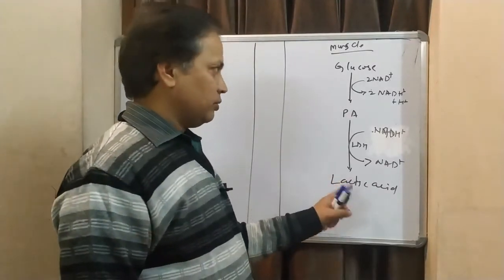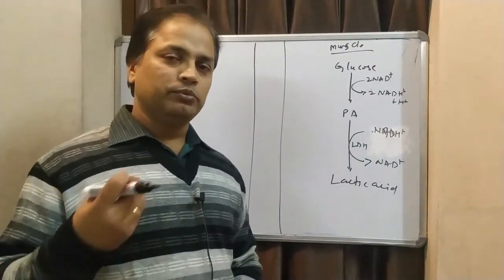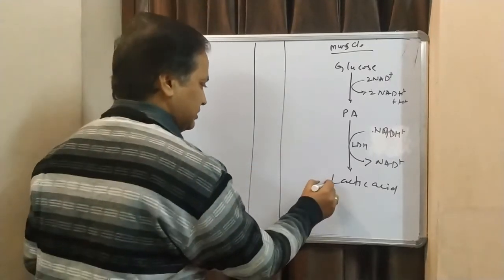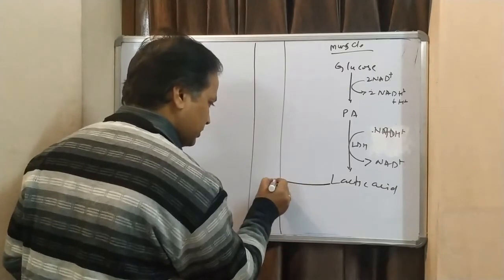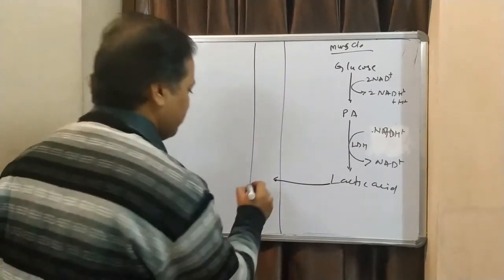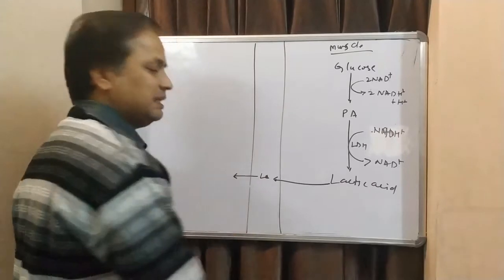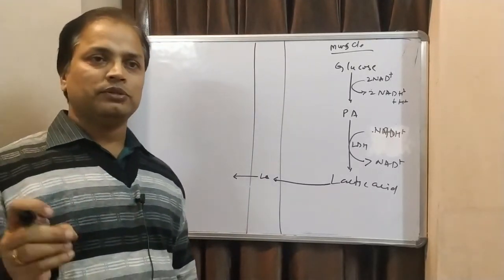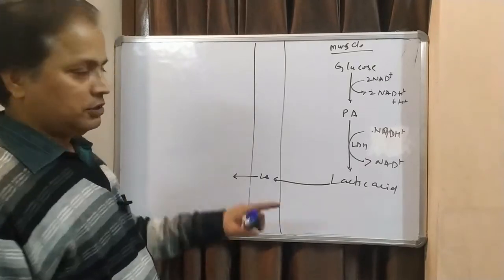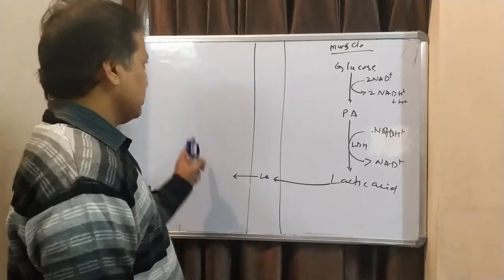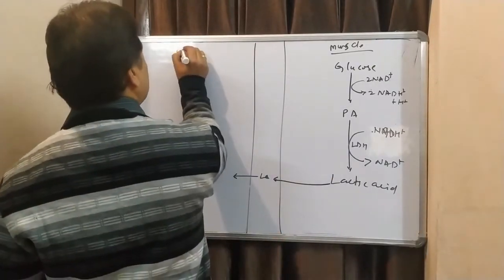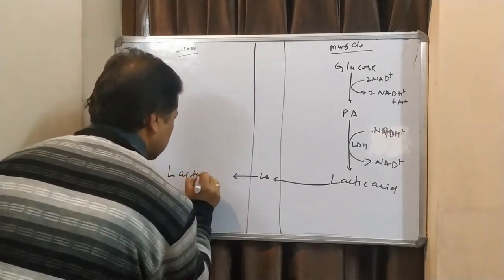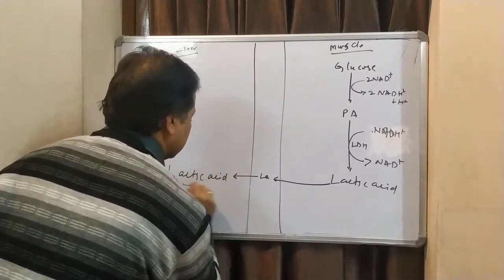This lactic acid, I have told you, it cannot be used by muscle. So we have to make some process by which we can use it. So this lactic acid, from here it will go to the blood. From blood, this lactic acid goes to the liver, mainly in the liver.